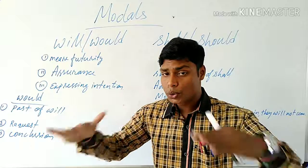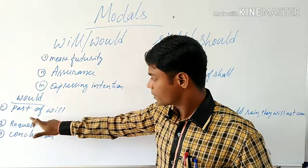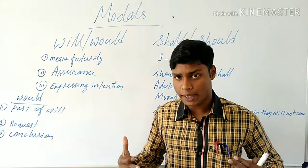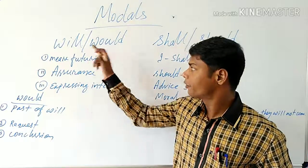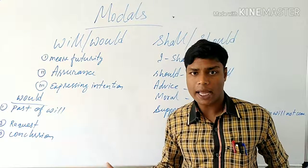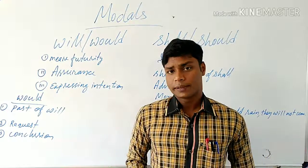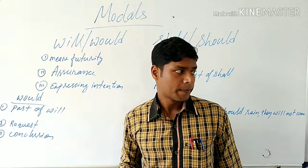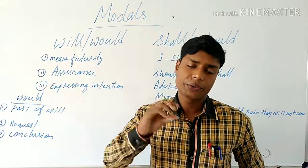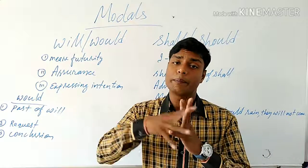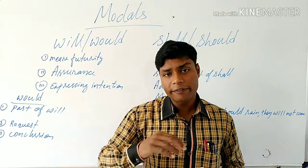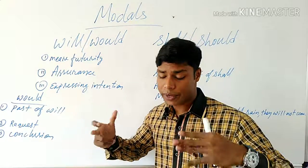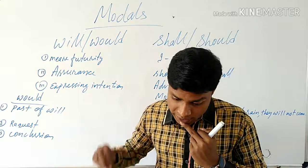Then comes assurance. When we assure something — that by all means I am going to do that — we use will and shall. Normally, I is used with shall and we, whereas will is used with you, he, she, and others. But when you are assuring something very strongly, you can use will with I and shall with he as well. That is called assurance.